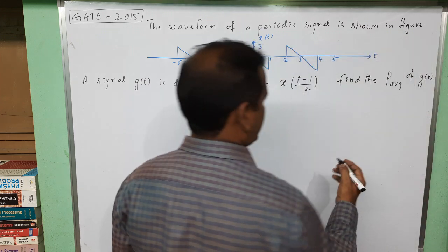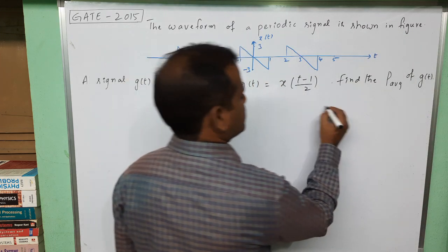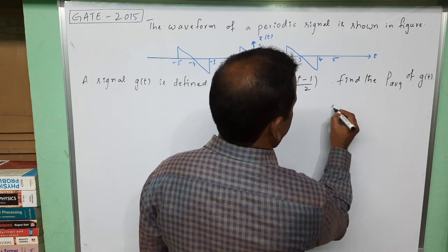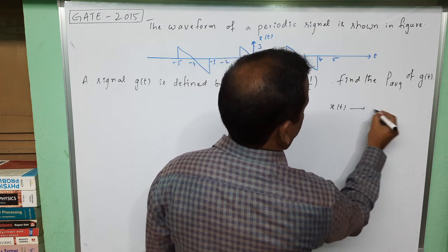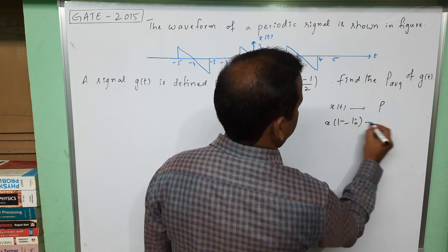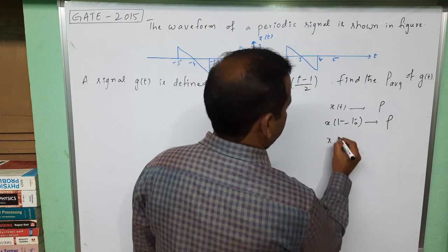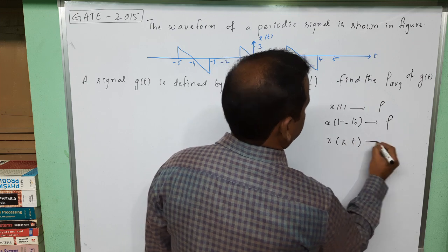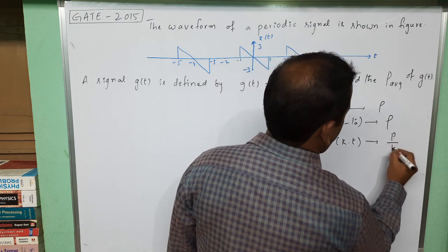First recall how power changes whenever the signal x(t) is shifted or scaled. If x(t) power is P, then x(t - t_0) shifted version power is same power P. If it is scaled by k then the power is P/k.